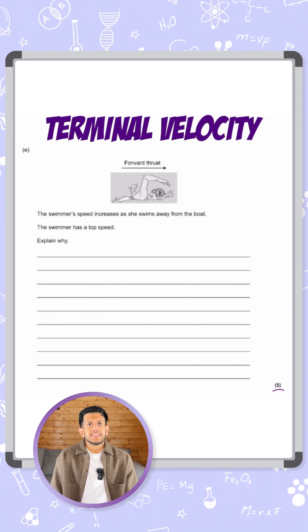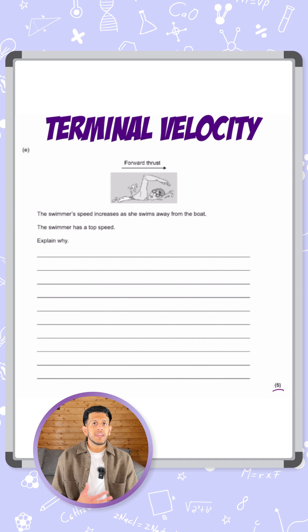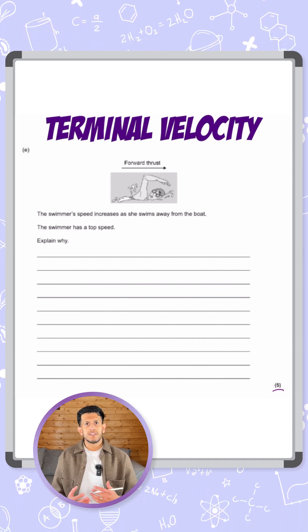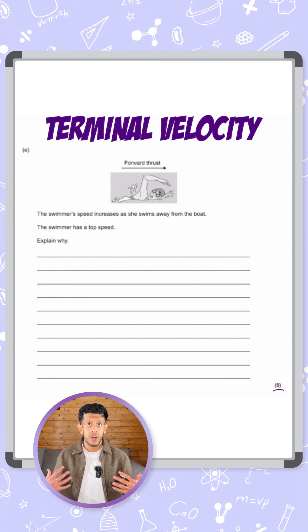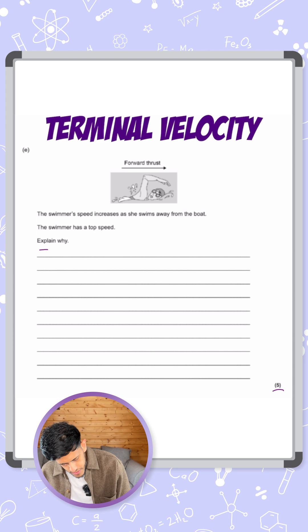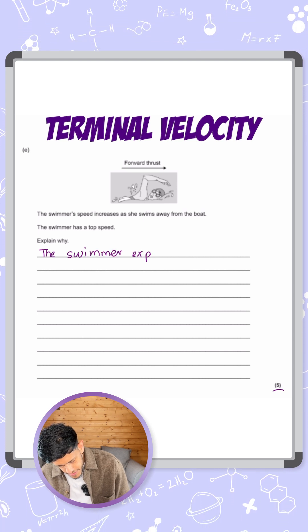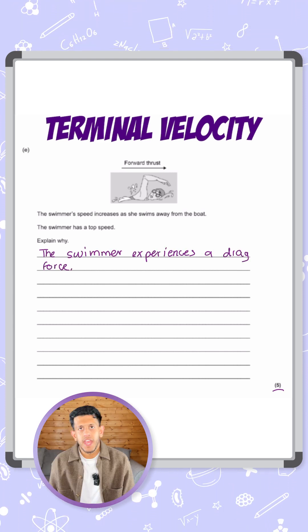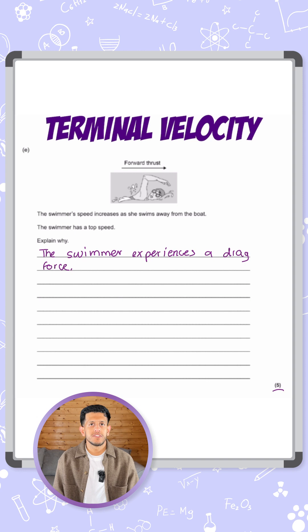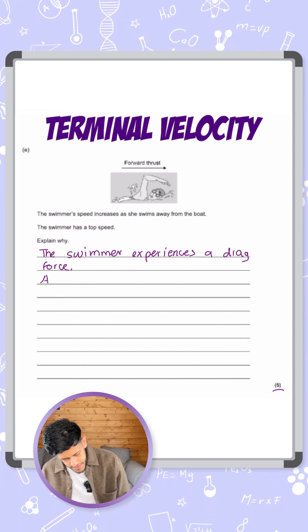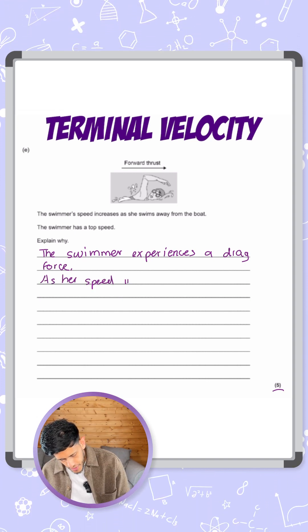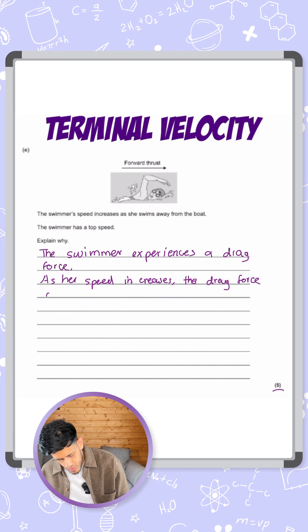So the first thing we're going to see is that she has an increasing drag force. Remember, she's moving one way. There's a force that's going to oppose her. So we're going to say the swimmer experiences a drag force. Now we need to evaluate how that force changes with her speed. So we say as her speed increases, the drag also increases.